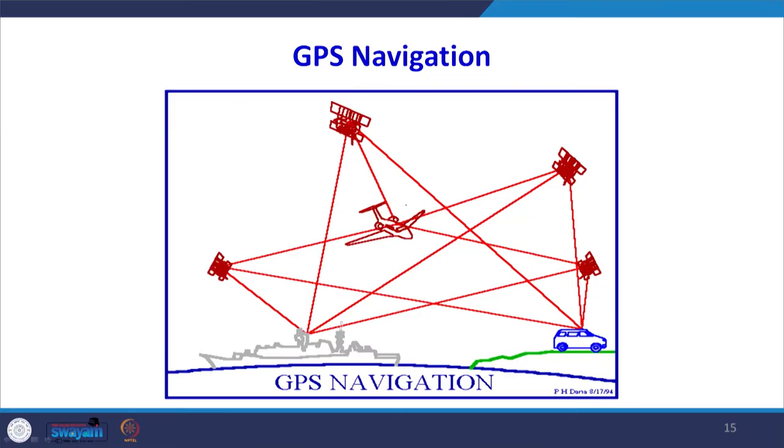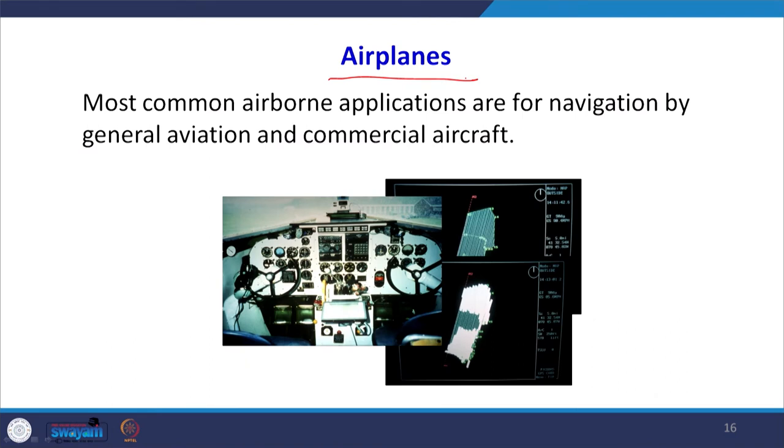Navigation is not just road navigation. It could be air navigation in aircraft, ship navigation, or vehicle-based navigation. The same set of satellites communicates with different receivers fitted in different devices — aircraft and ships — and signals are converted into coordinate systems to help with navigation. Aeroplanes have been using GPS-based navigation for a long time, and with improvement in technology, general aviation has become much more precise. Takeoff and landing have become much more precise with the help of GPS.